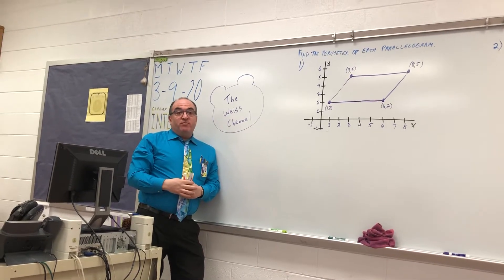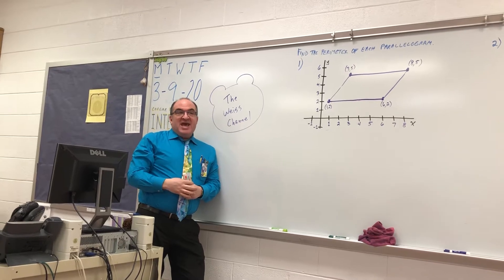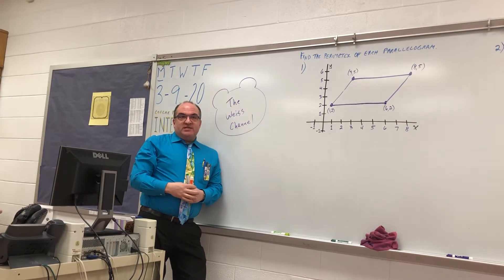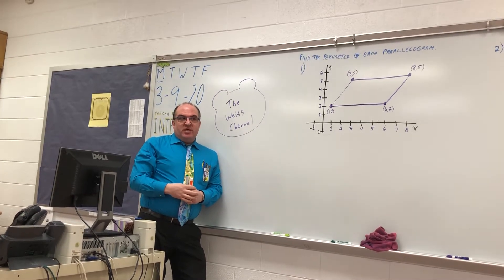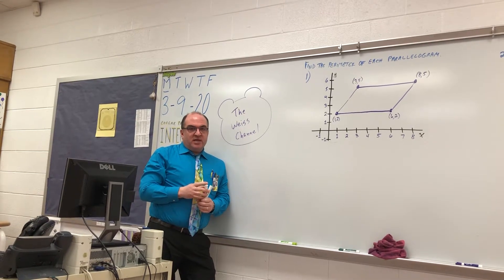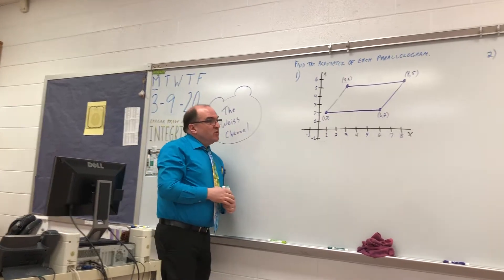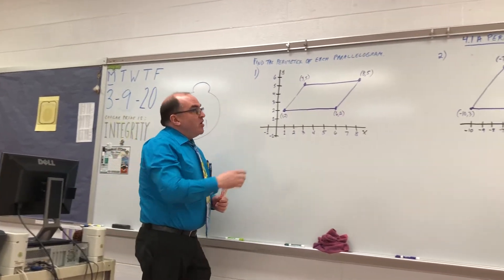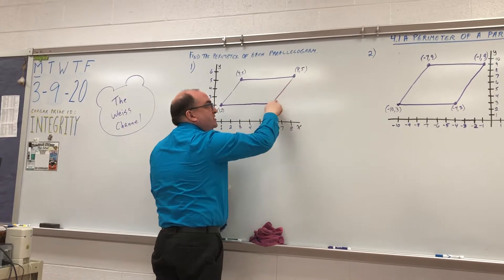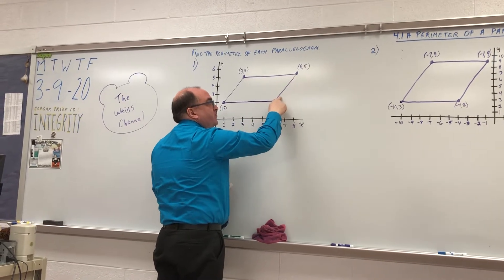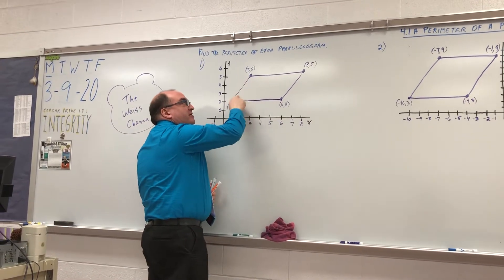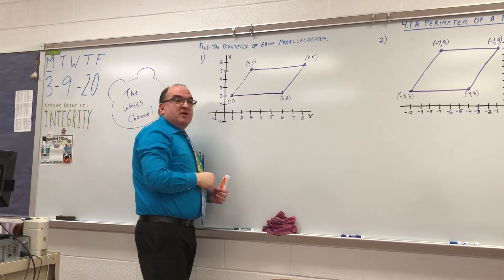We've done the perimeter of a rectangle, and then we spent time doing the distance between two points. So now we're going to take the distance between two points like this and double it, because there are two of these sides.